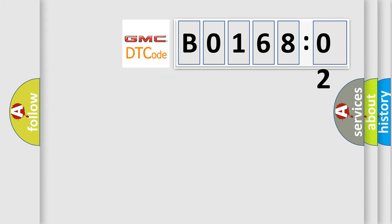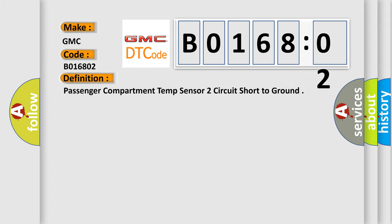So, what does the diagnostic trouble code B016802 interpret specifically for GMC car manufacturers? The basic definition is: Passenger compartment temp sensor to circuit short to ground.